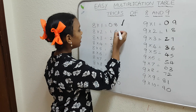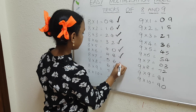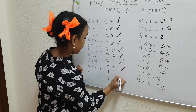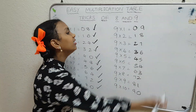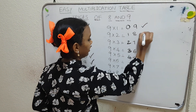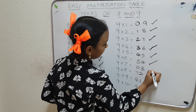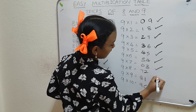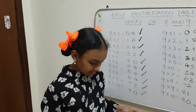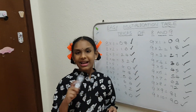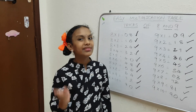8 ones are 8, 8 twos are 16, 8 threes are 24, 8 fours are 32, 8 fives are 40, 8 sixes are 48, 8 sevens are 56, 8 eights are 64, 8 nines are 72, 8 tens are 80. Please like, share, subscribe and hit the share button — bye, see you soon!